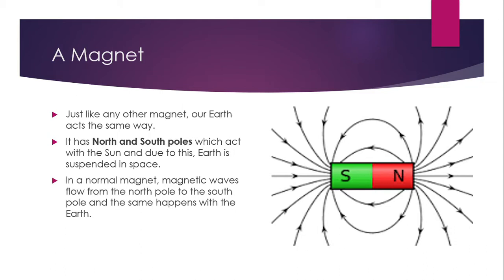In a normal magnet, magnetic waves flow from the north pole to the south pole and the same happens with the Earth.